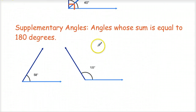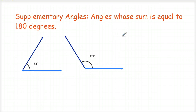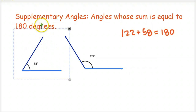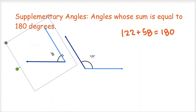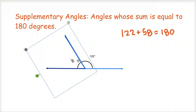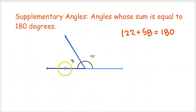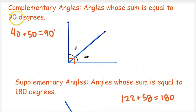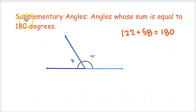With supplementary angles, those are angles whose sum is equal to 180 degrees. In this case, 122 degrees plus 58 degrees equals 180 degrees. Supplementary: 180. Complementary: 90. If you made these two adjacent angles and put them next to each other sharing a vertex and a common side, they would make up a linear pair and add up to 180. So if two adjacent angles make a right angle, they're complementary; if they make a linear pair, they're supplementary and their sum is 180 degrees.